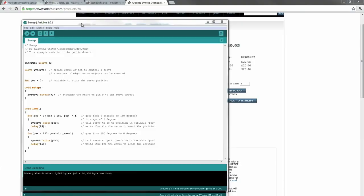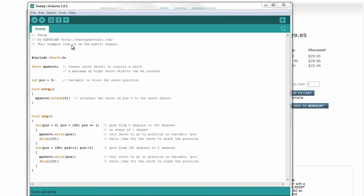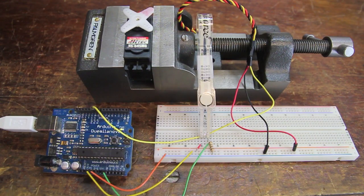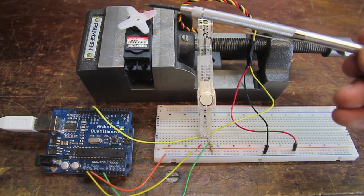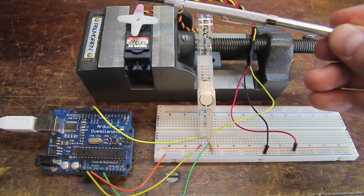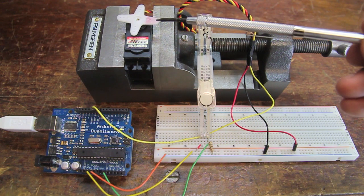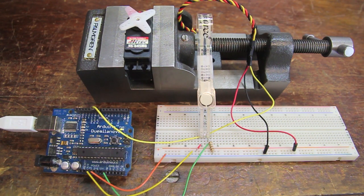So let's hop back over to the software, upload the code, and see what happens. Again, this was sample code, so no changes needed. We'll just go ahead and click upload. You'll see right here the status. It'll say done uploading in just a second. Done uploading. So let's take a look at what happened. Simple enough. You can see the servo is rotating from zero, which I would say is on the left, all the way up to 180 degrees and then back to zero.